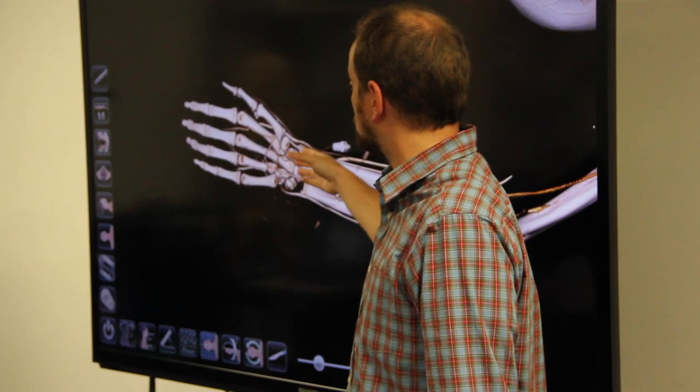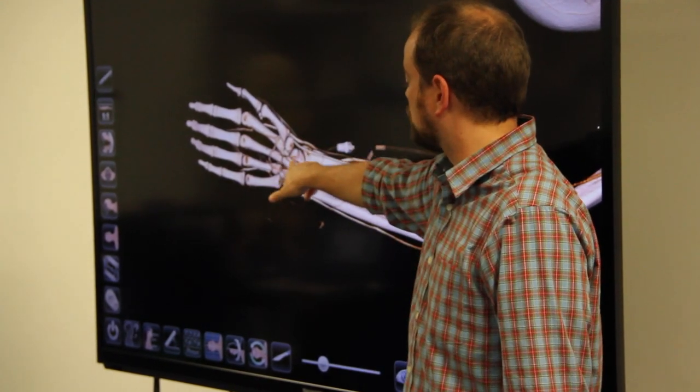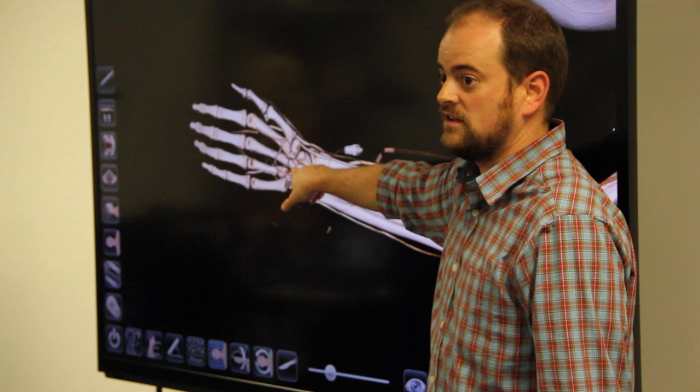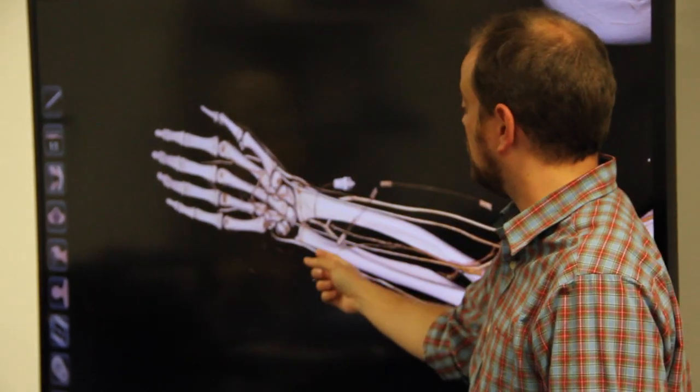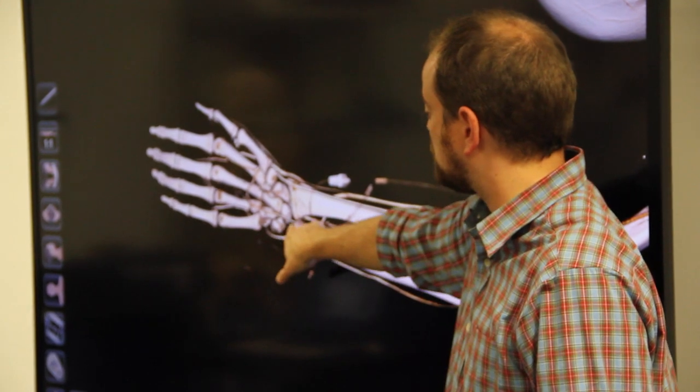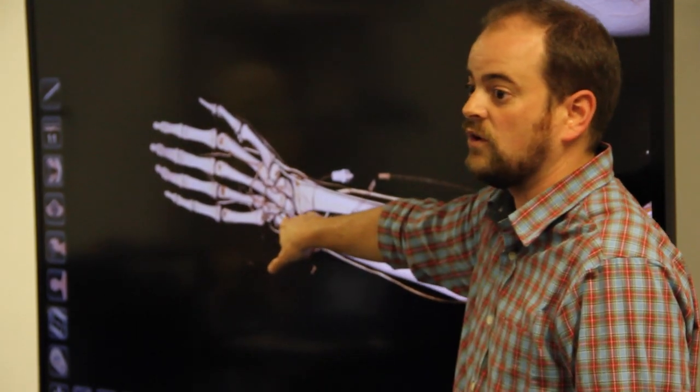But we can see that the radius is going to be attaching here towards the scaphoid and the lunate. So that's going to be the dominant bone-to-bone connection on the distal end of the wrist, whereas we can see that space for the articular disc here where the ulna would be.